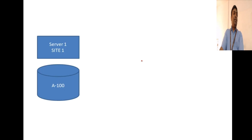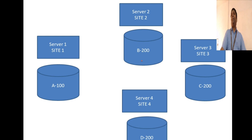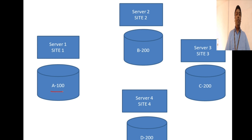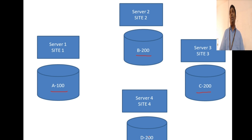Let me show what the two-phase commit protocol is using animations. We take four servers in different sites — site 1, site 2, site 3, site 4 — with account A = 100 at site 1, account B = 200 at site 2, account C = 200 at site 3, and account D = 200 at site 4. Each site has a hard disk and an instance running in RAM. We have four accounts distributed across different sites in a distributed system.